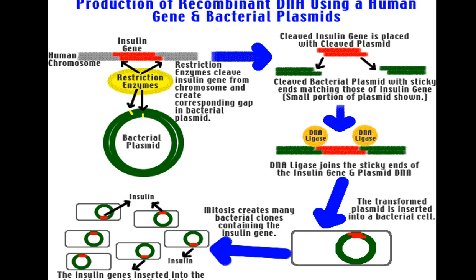Many diabetic patients take insulin shots and insulin injections. How are these made by pharma companies? They are making insulin only by recombinant DNA technology. This is how insulin is produced by rDNA technology — pharma companies produce and supply this insulin for human diabetes treatment.